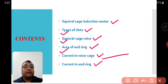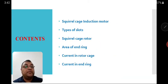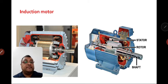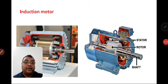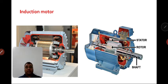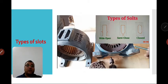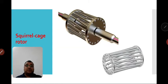In the previous session, we went through the picture of the induction motor — there are two parts: stator and rotor, with an air gap in between. We also discussed the types of slots: mainly three types are there — wide open, semi-closed, and closed slots — and then the squirrel cage rotor.